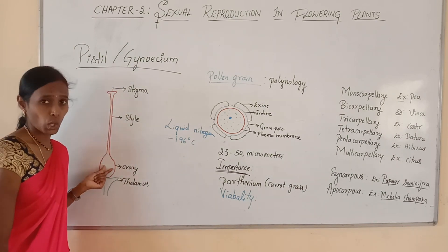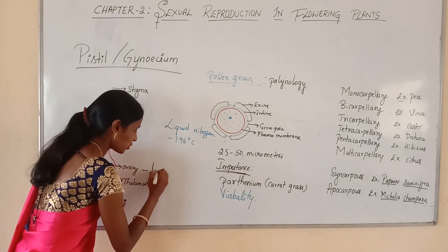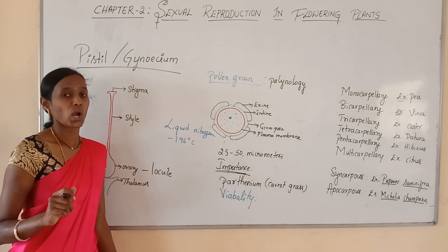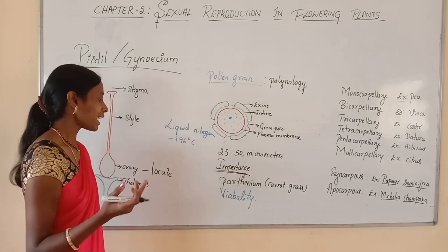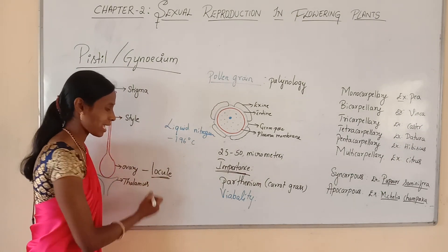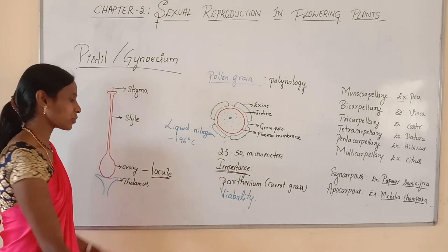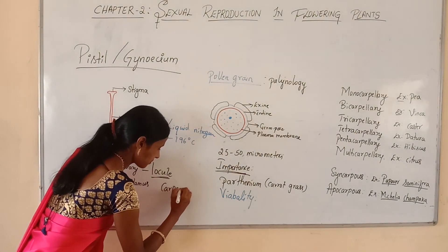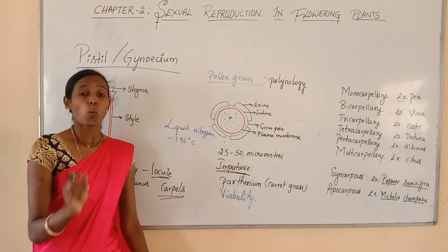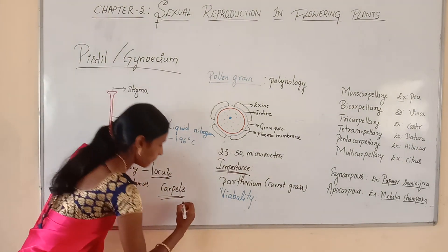Within the ovary, there is an ovarian cavity called the locule. The number of locules may be variable — it may be one or many. The ovary encloses one to many structural units called carpels. Carpels are nothing but megasporophylls — just as in gymnosperms, microsporophylls and megasporophylls exist.